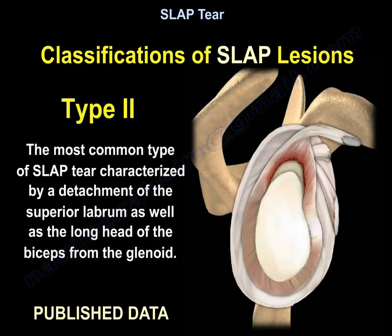Type 2 is the most common type of SLAP tear, characterized by detachment of the superior labrum as well as the long head of the biceps from the glenoid.